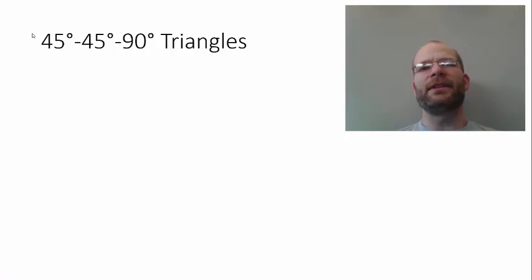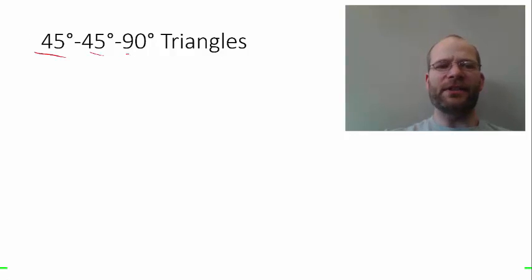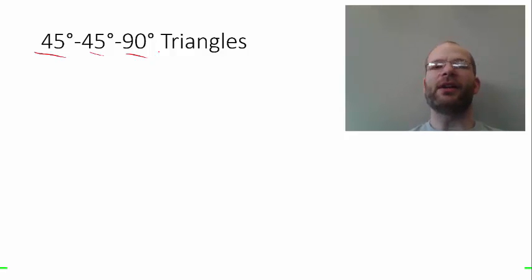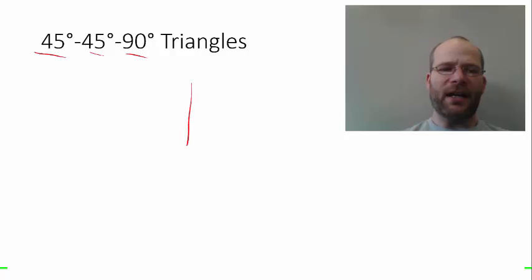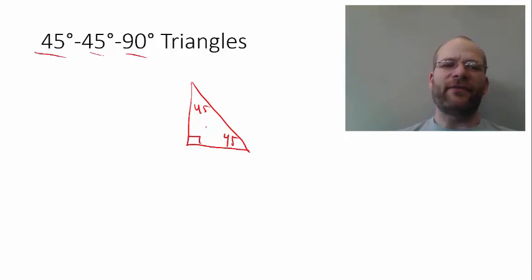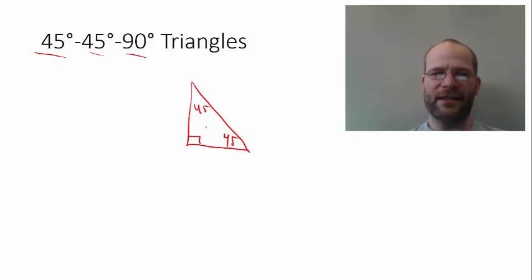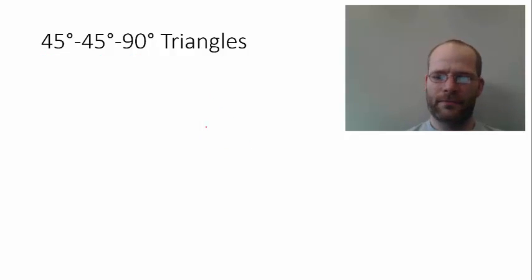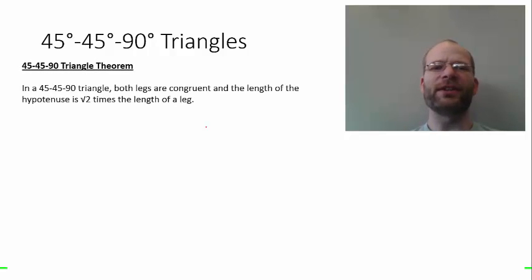It's common when we talk about special right triangles to reference the angle measures of the different vertices. So in a 45-45-90 triangle, that means we're talking about a triangle that has angle measures 45, 45, and 90. You'll notice that all 45-45-90 triangles are exactly the same shape. Here's a theorem called the 45-45-90 triangle theorem.